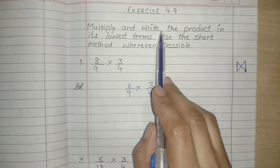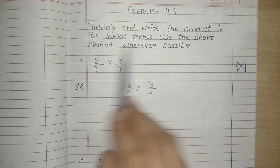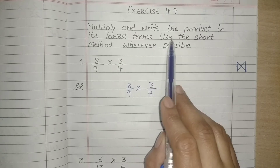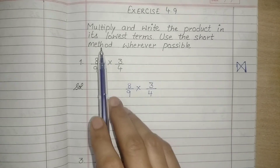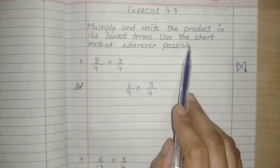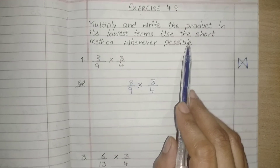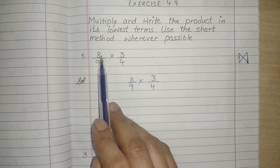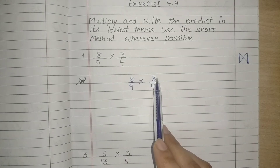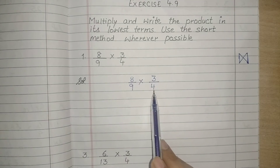Multiply and write the product in its lowest terms. Use the short method wherever possible. So the fractions are 8 upon 9 multiplied by 3 upon 4.